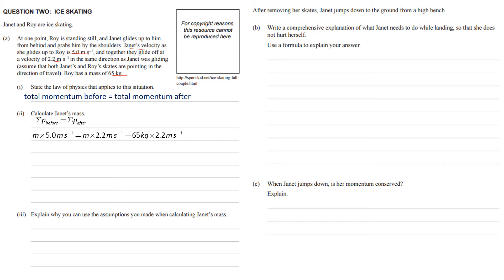The momentum before is only the mass of Janet, which I'm going to put here as m, times her velocity, and the momentum afterwards is the mass of Janet times her new velocity, which is 2.2 m per second, plus the mass of Roy times his velocity.